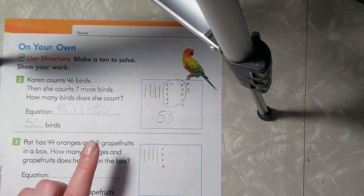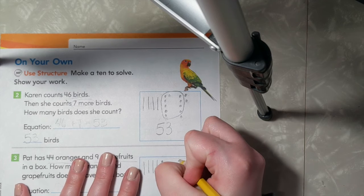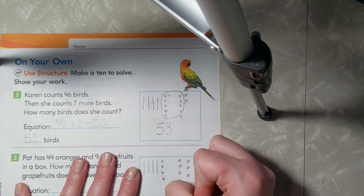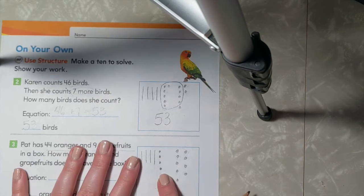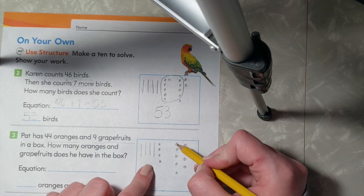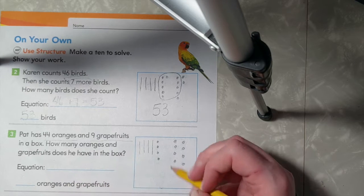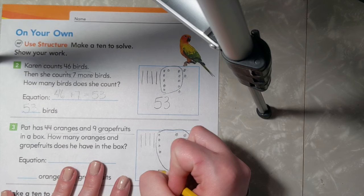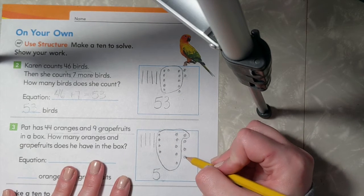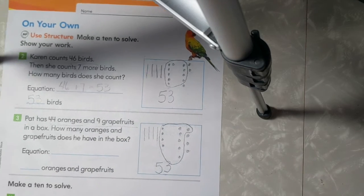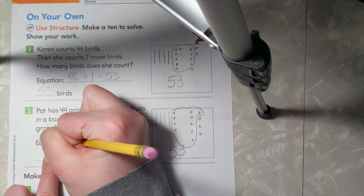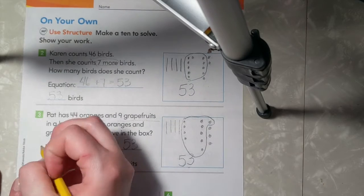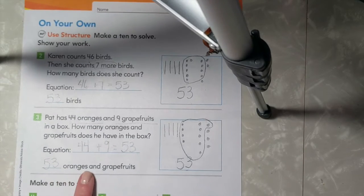I have 9 grapefruits, or Pat has 9 grapefruits. So we will add 1, 2, 3, 4, 5, 6, 7, 8, and 9. Let's count on from our 4 to make a group of 10. So I have 4, 5, 6, 7, 8, 9, 10. Let's circle them. Now I have 5 groups of 10 to make 50 and 1, 2, 3 ones to make a total of 53. So my equation will be 44 plus 9 equals 53. So there are 53 oranges and grapefruits.